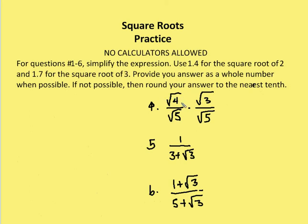I have the square root of 4 over the square root of 5 times the square root of 3 over the square root of 5. The square root of 4 times the square root of 3 — since the square root of 4 equals 2, I get 2 root 3. And the square root of 5 times the square root of 5 is simply 5. So I end up with 2 root 3 over 5.